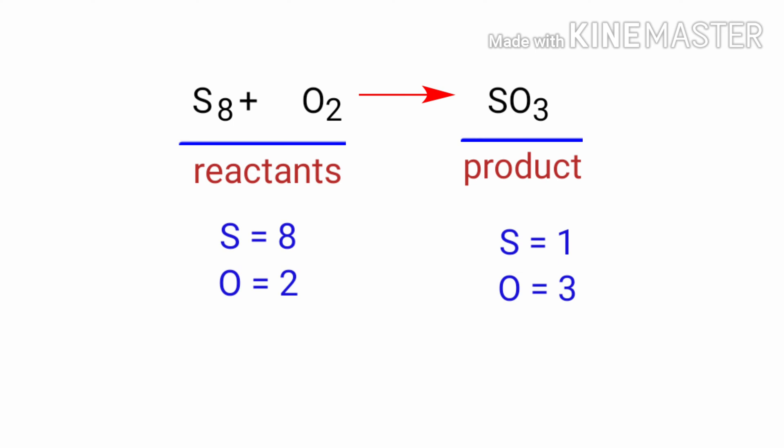In the reactants side, there are 8 sulphur atoms and 2 oxygen atoms. And on the product side, there is 1 sulphur atom and 3 oxygen atoms. The number of atoms are not balanced on both sides.